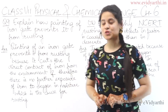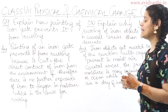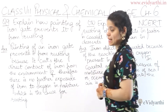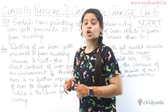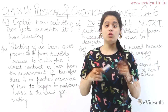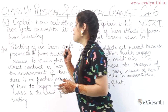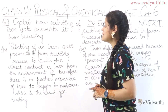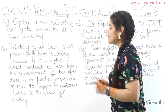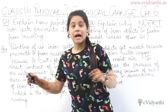Now coming to the next question. Question number 9 says: explain how painting of iron gate prevents it from rusting. جو لوہے کے gate ہوتے ہیں اس پہ paint کیا جاتے ہیں. Painting of an iron gate prevents it from rusting because it cuts the direct contact of iron from the environment.